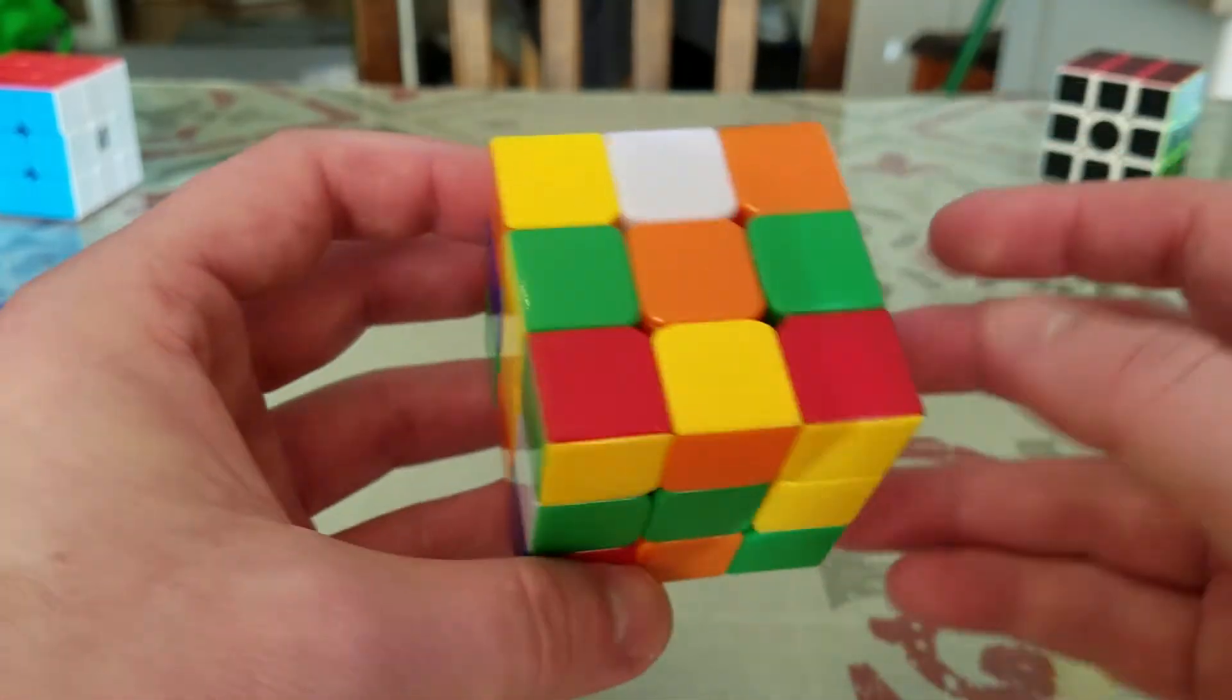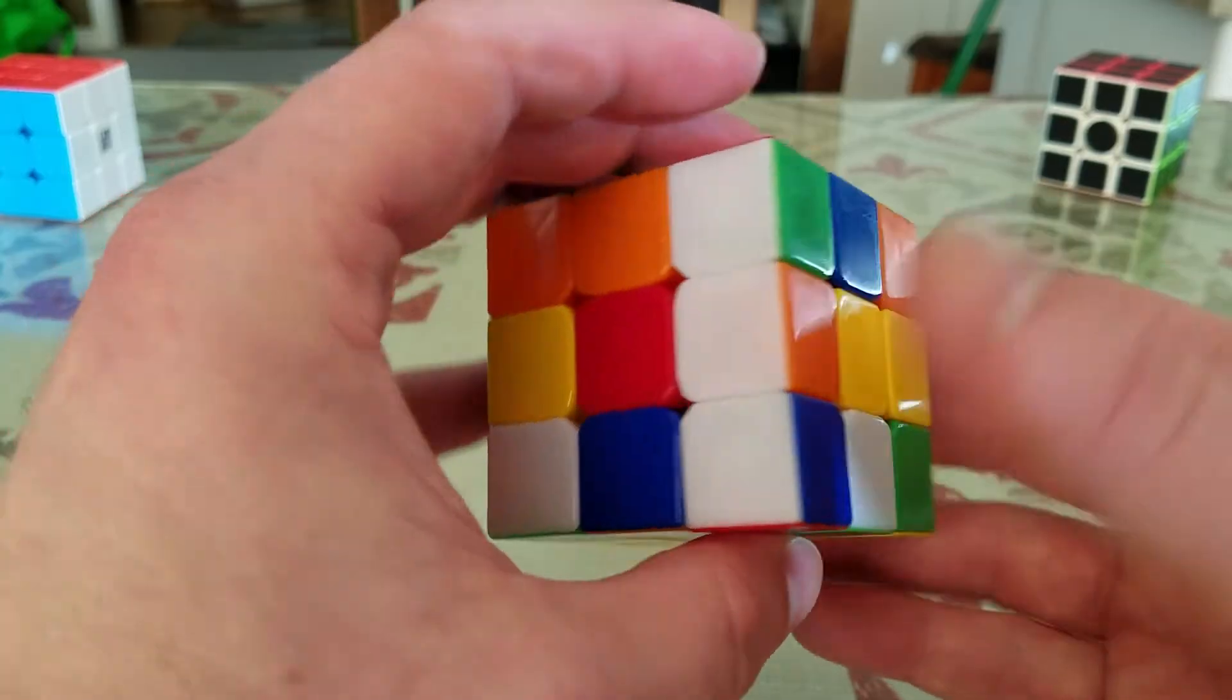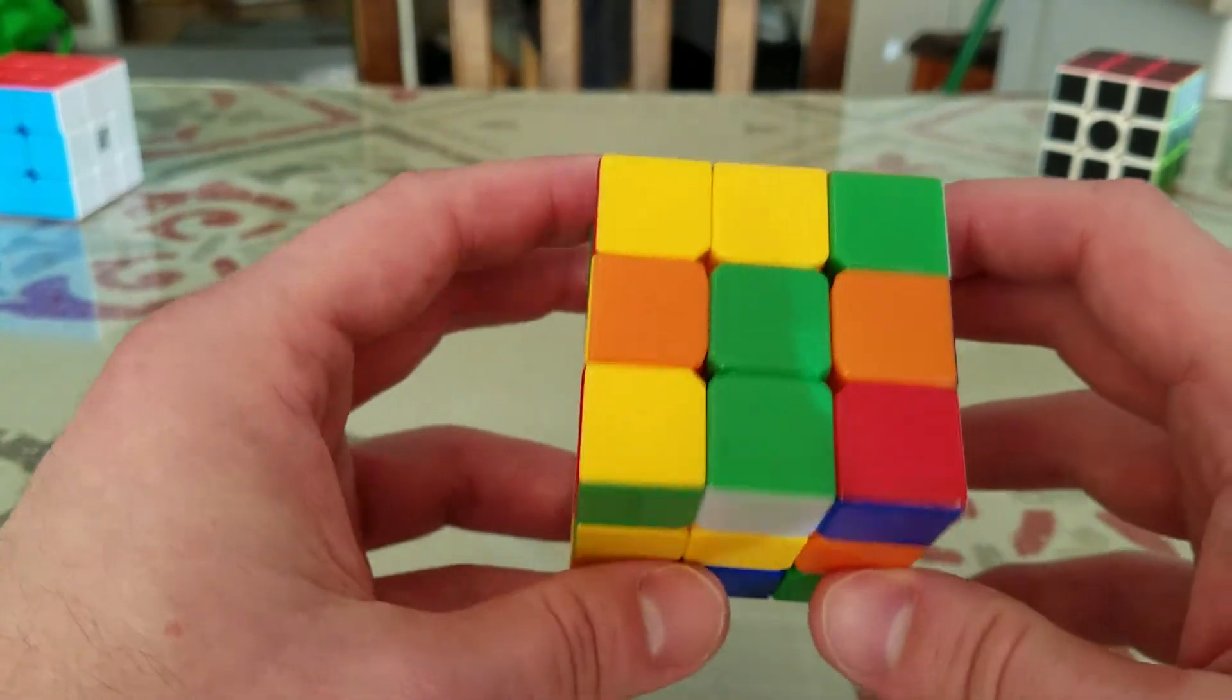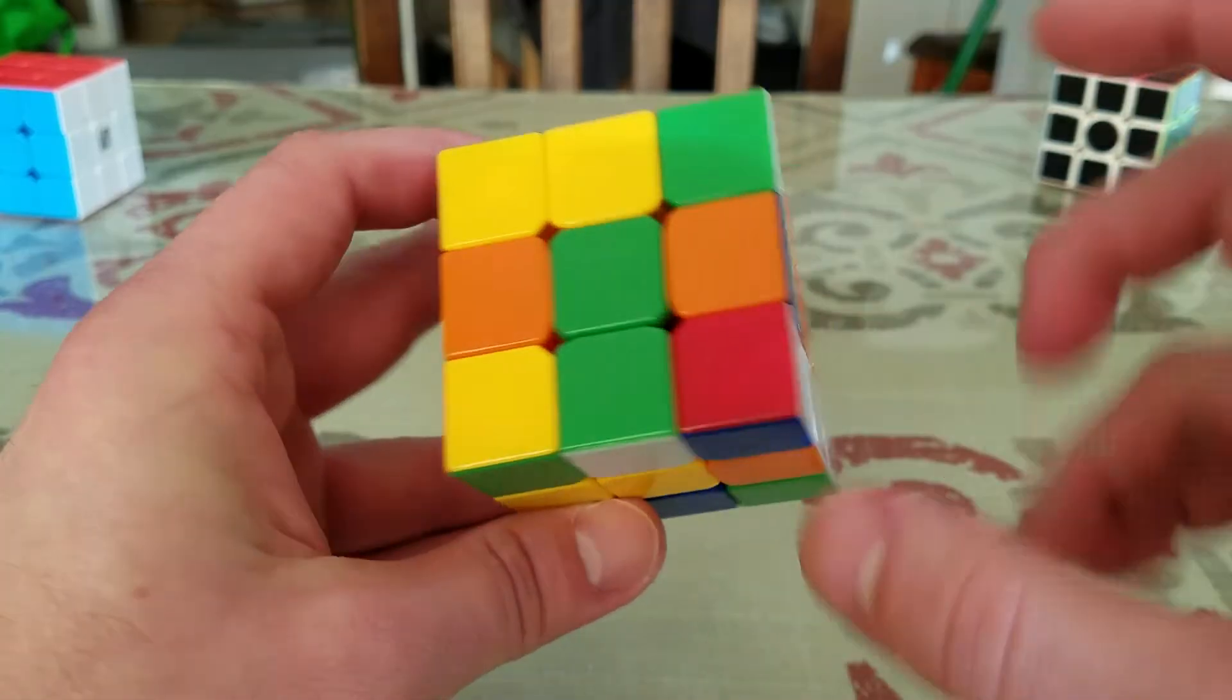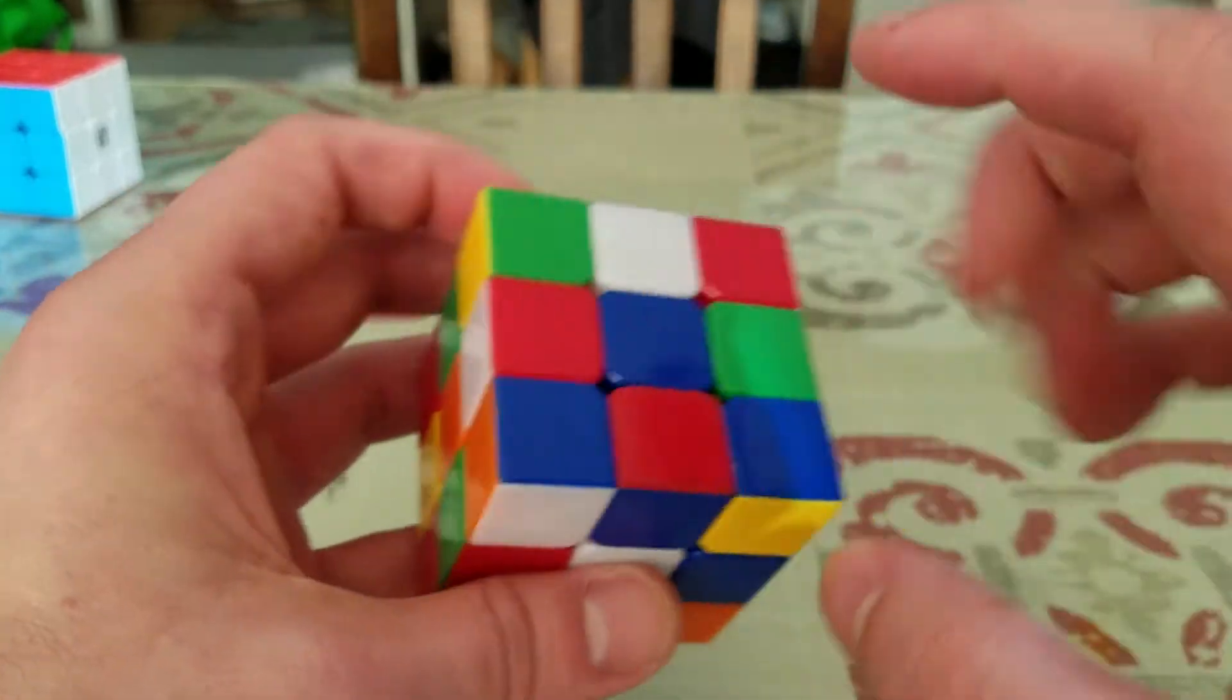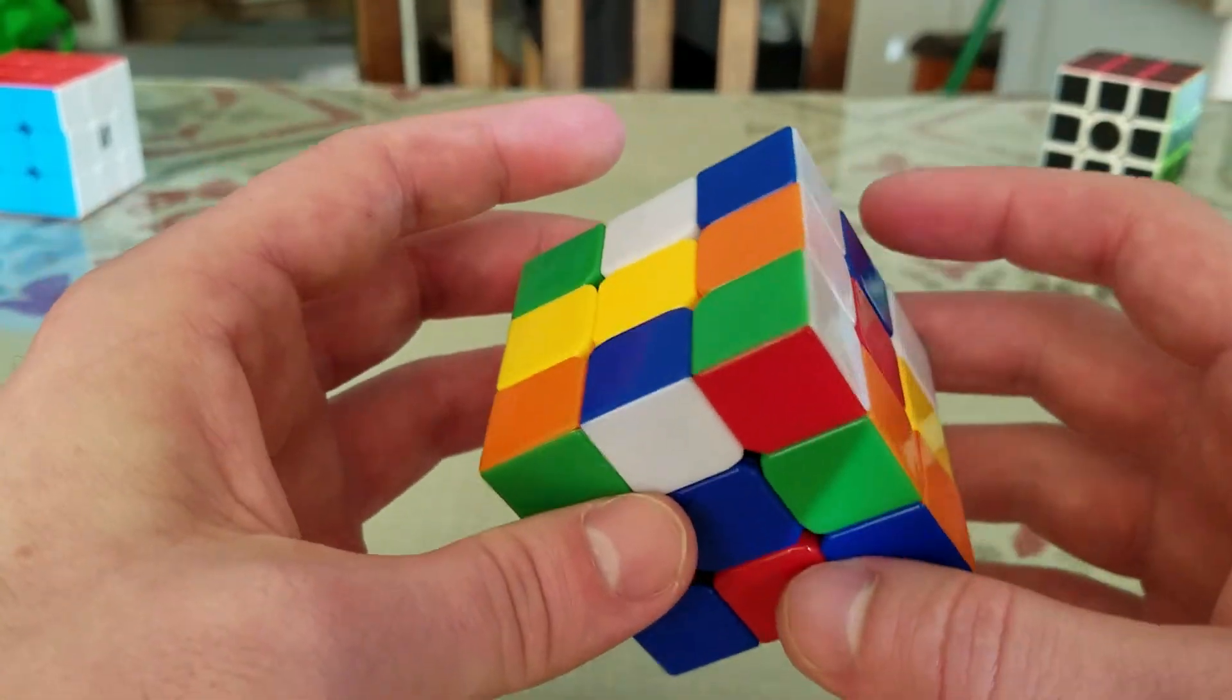Now the first thing we need to do is establish which side of the Rubik's Cube each color belongs to. And that's done by looking at the color of the piece in the center of each side. This being the white side, this being the blue side, and so on.